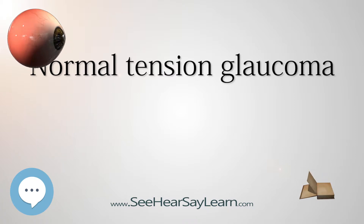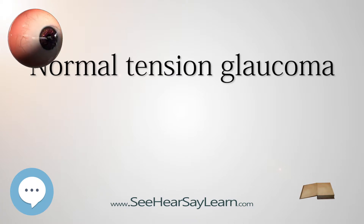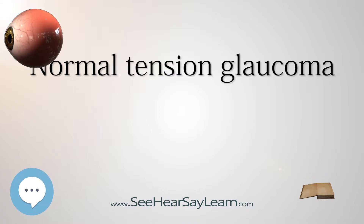The pillar of the current understanding of normal tension glaucoma is a reduced IOP tolerance of the retinal ganglion cells and the cells in the optic nerve head. An IOP of, for example, 17 or 19 mmHg that would not affect a healthy eye leads to damage in the eye of an NTG patient.